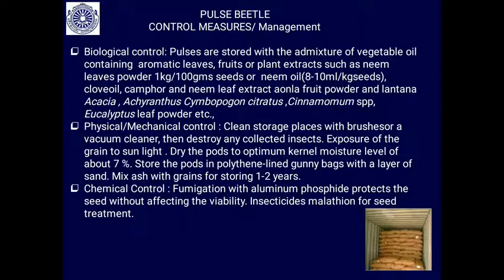For biological control, pulses can be stored in admixtures of vegetable oil or aromatic plant extracts. Neem leaf powder — 1 kg per 100 g of seeds — can allow storage for one to two years. Neem oil, 8 to 10 ml applied to seeds, also preserves them for a longer duration. Other effective plant materials include camphor, clove oil, amla fruit powder, lantana extract, acacia, cymbopogon (lemongrass), cinnamon, and eucalyptus oil.